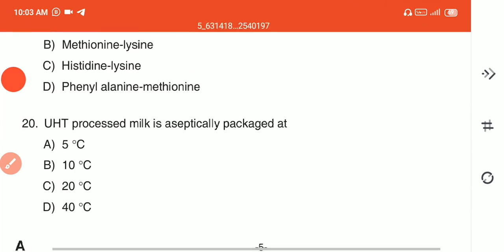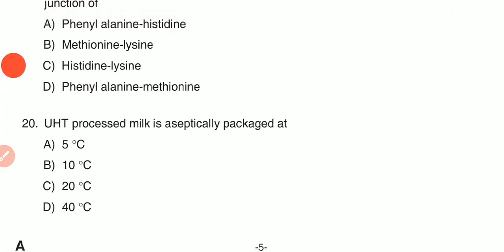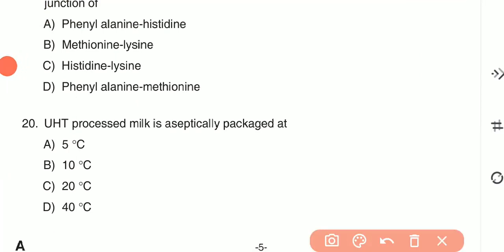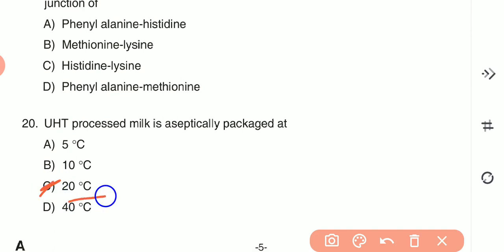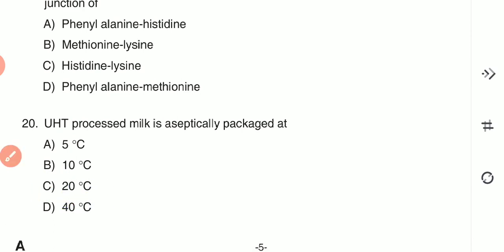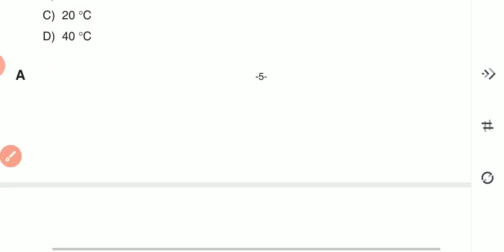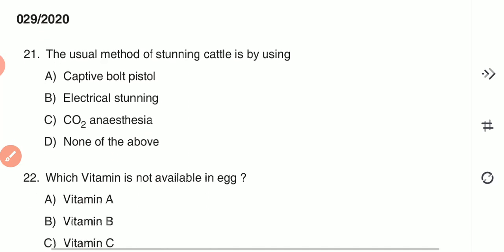Question 20: UHT processed milk is aseptically packaged at which temperature? (A) 5°C, (B) 10°C, (C) 20°C, or (D) 40°C. UHT processed milk is aseptically packaged at 20°C — option C is the correct answer.